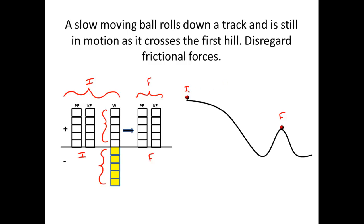I'm going to label this my initial conditions — the ball as it initially comes in. This is a slow-moving ball, so it definitely has an initial velocity greater than zero. It's going to roll down a track and is still in motion as it crosses the second hill too, so I'll clearly have a final velocity here — probably greater than I started because I've gone downhill. Since I'm disregarding frictional forces, there's going to be no negative work.